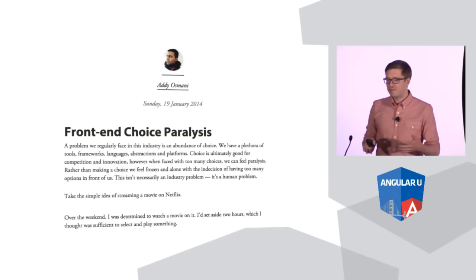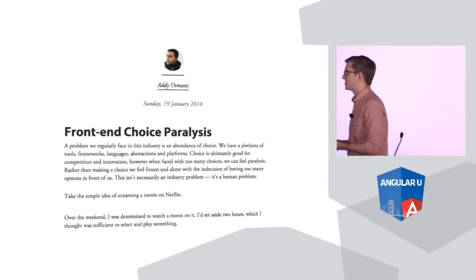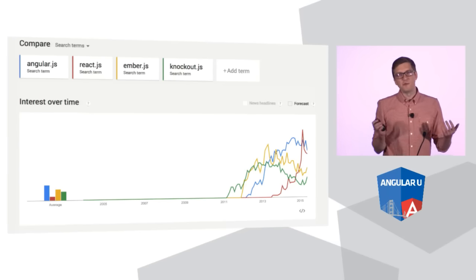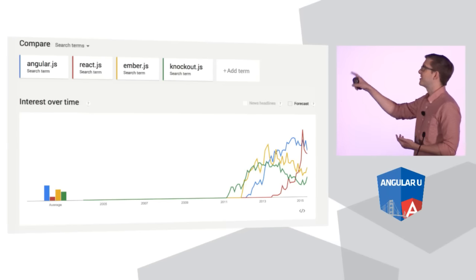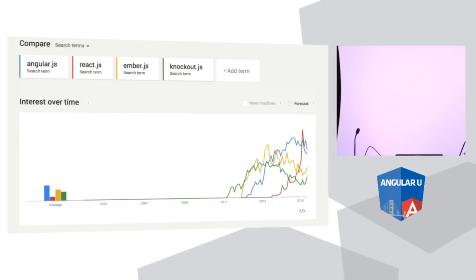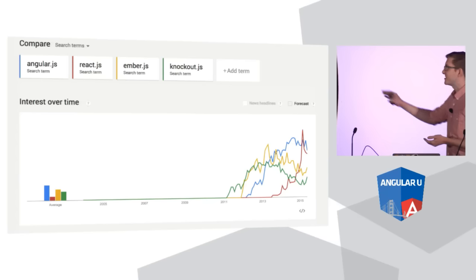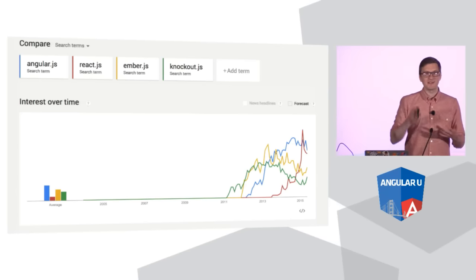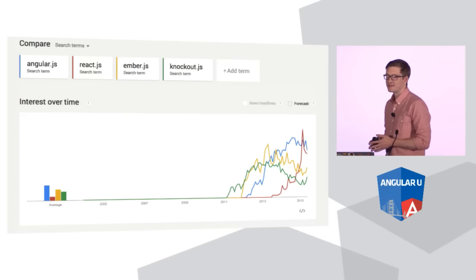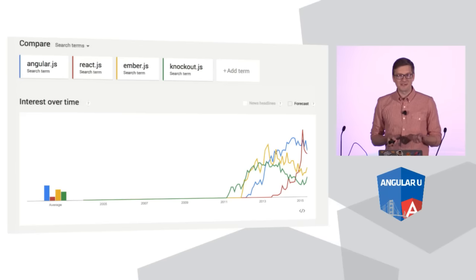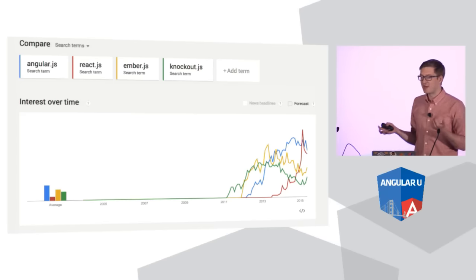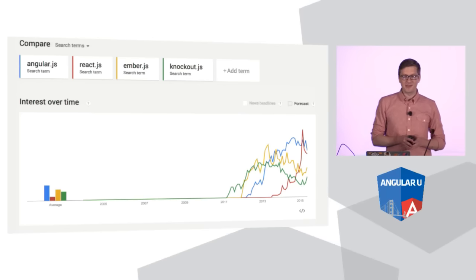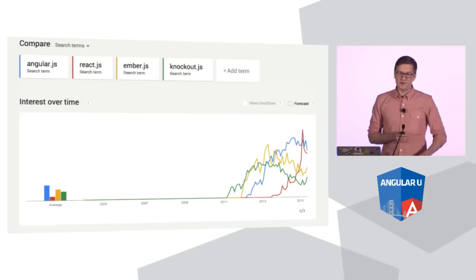Looking at all the different frameworks and libraries and tools that are out there today, any time you start a new project, you've got this whole tree of decisions that you have to deal with. I did some Google Trends research recently, looking at all the different front-end MVCs — Angular, React, Ember, Knockout — this is developer interest, people Googling these things over time. You can see that there's like this natural bell curve, an ebb and flow to these things. From this perspective, web development looks pretty crazy. There's a lot of things to choose from, and as a developer, I want to make sure the thing I choose is on the up and not on the downslope.